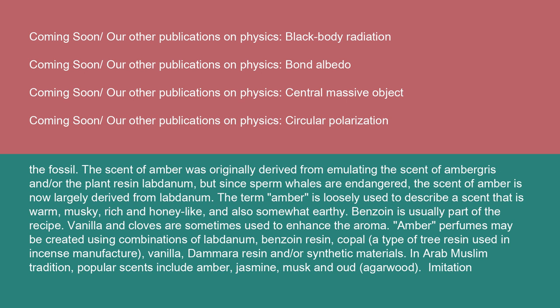The scent of amber was originally derived from emulating the scent of ambergris and/or the plant resin labdanum. But since sperm whales are endangered, the scent of amber is now largely derived from labdanum. The term amber is loosely used to describe a scent that is warm, musky, rich, and honey-like, and also somewhat earthy. Benzoin is usually part of the recipe. Vanilla and cloves are sometimes used to enhance the aroma.